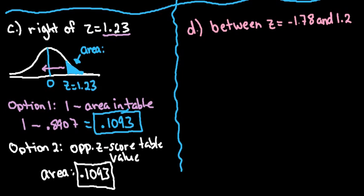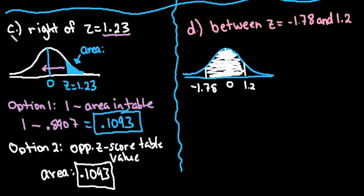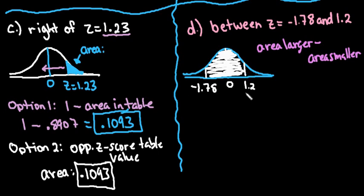The last example is the most complicated with the table — I honestly prefer doing this in a calculator for more precise answers since the table gives rounded values. We want the area between z = -1.78 and z = 1.2. To find the area between two z-scores, find the area of the larger minus the area of the smaller. So I'll start by finding the area for the larger value, z = 1.20.